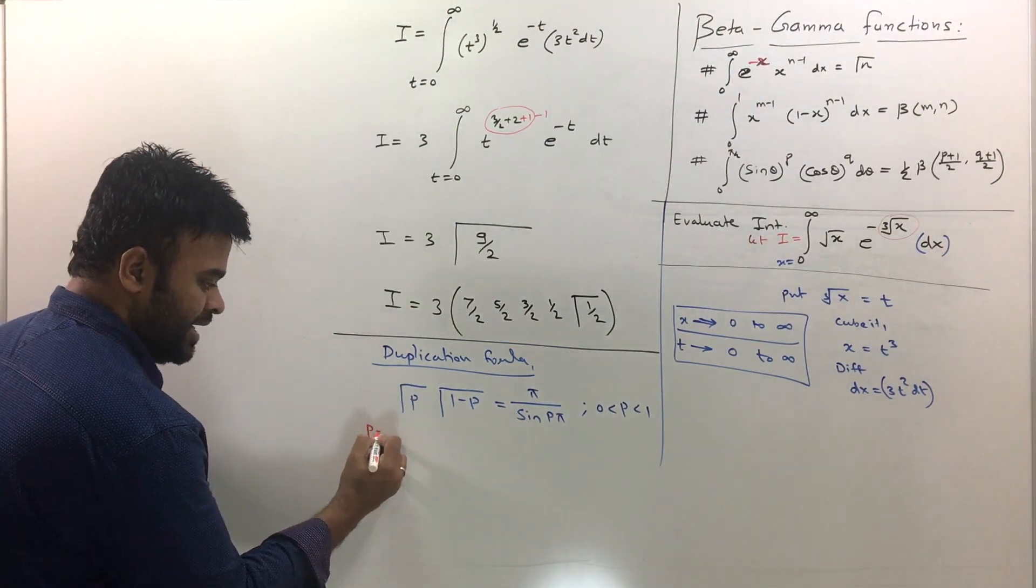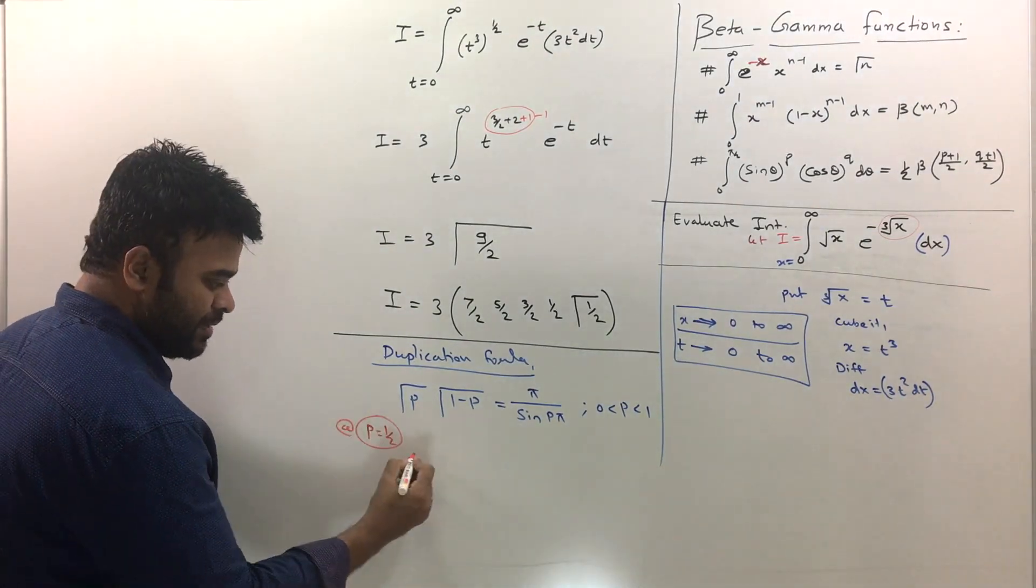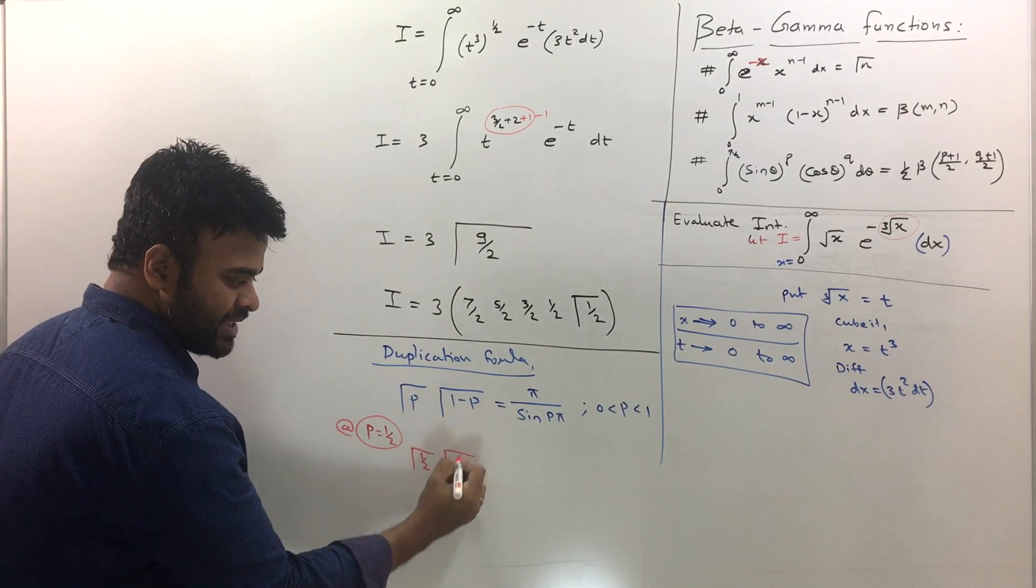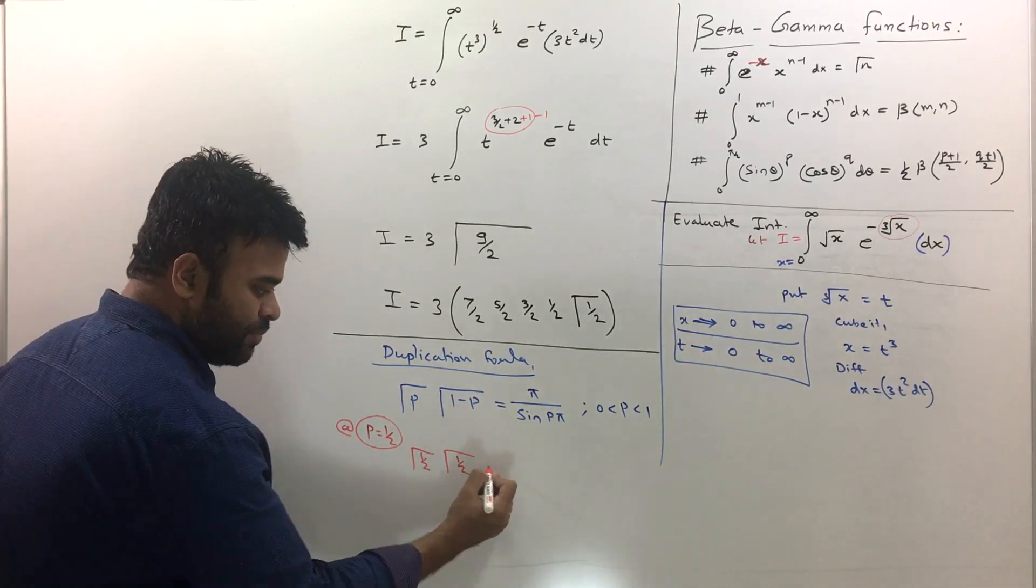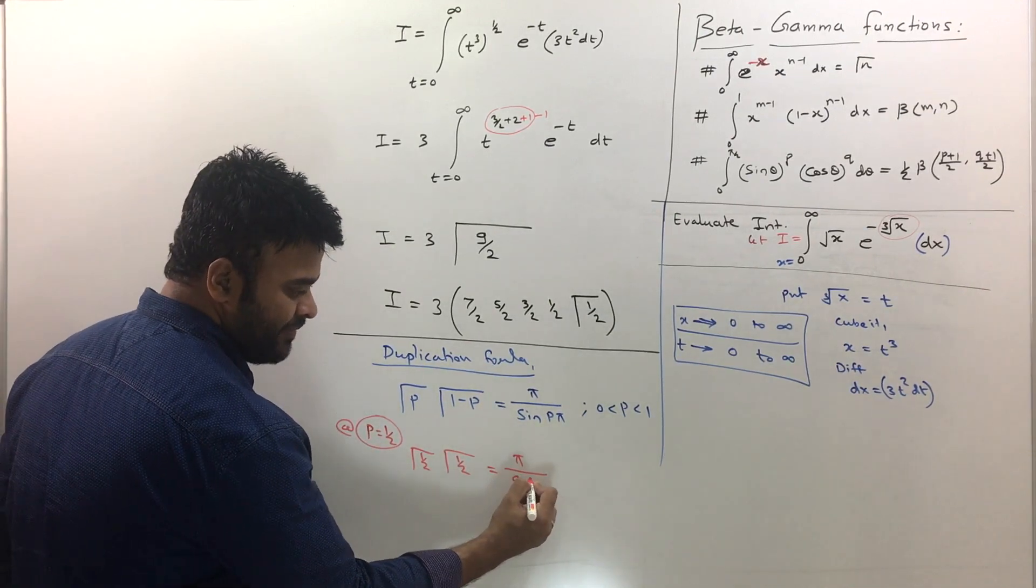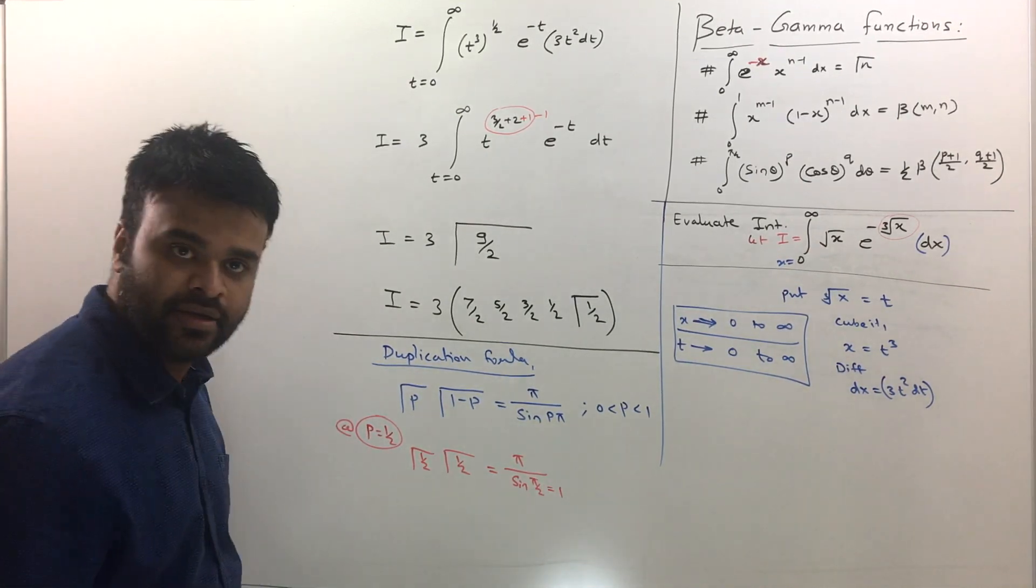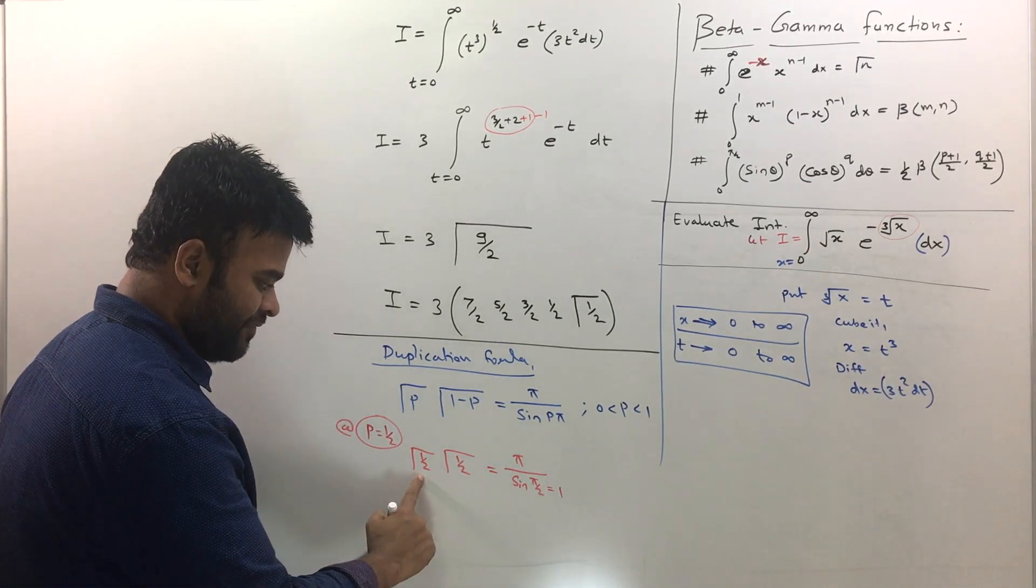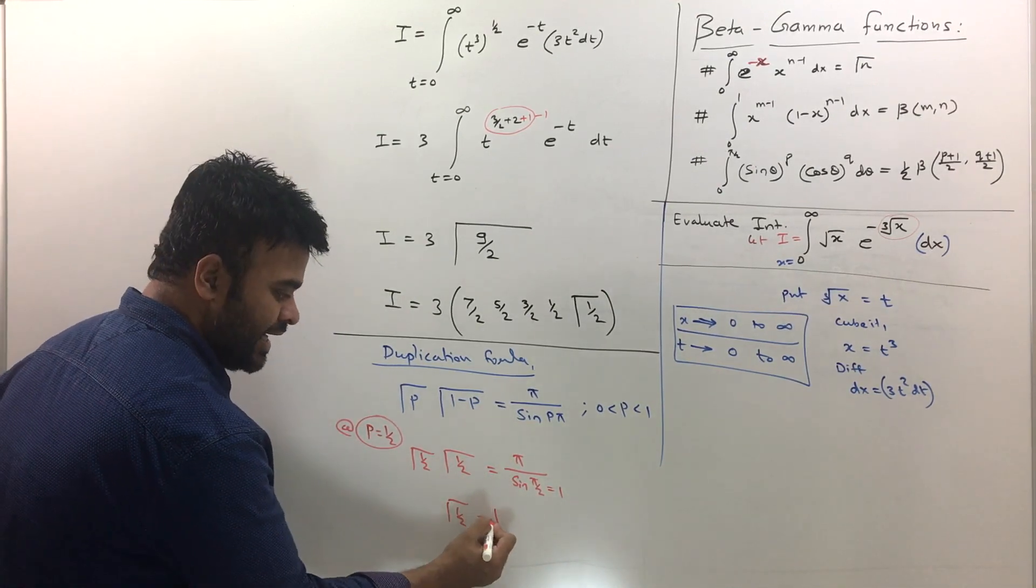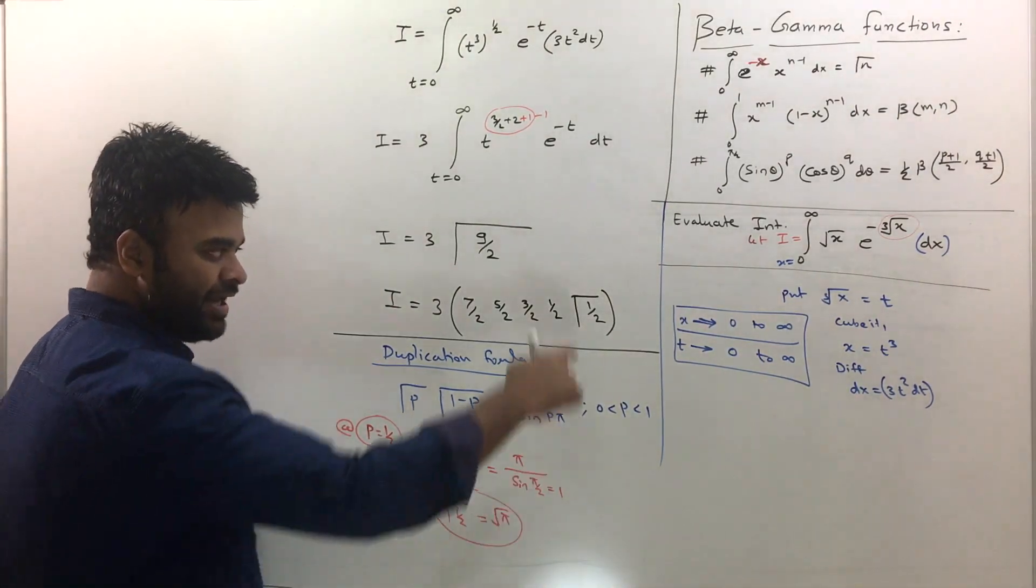Now let me take one example. Let's take a value p is equal to half. Say, p is equal to half. This will become gamma half. Then this is gamma p is half, so 1 minus half is also half. And put that value here as well. The pi stays pi. And sine p pi will become sine pi by 2. Now sine pi by 2, the value sine pi by 2 is just 1. And if you have gamma half, gamma half, that is gamma half square.